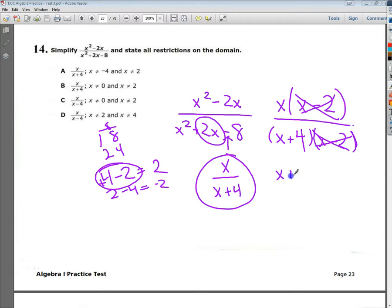So I'm going to set x plus 4 equal to 0 and x minus 2 equal to 0. I'm just going to solve these like I would anything else and end up with x is equal to negative 4 and x is equal to positive 2. These are the restrictions in my domain. So I can say with relative confidence that the answer to number 14 is a.